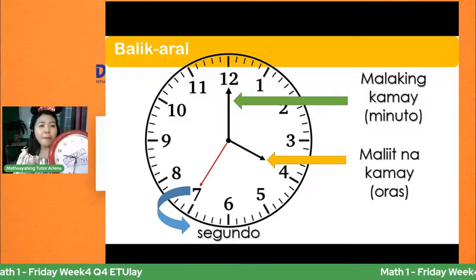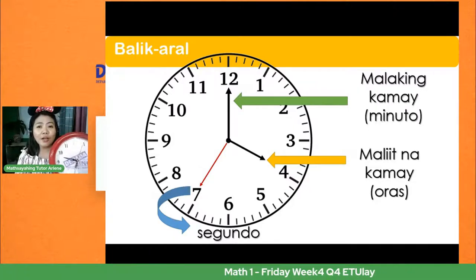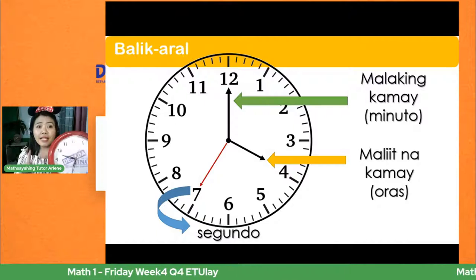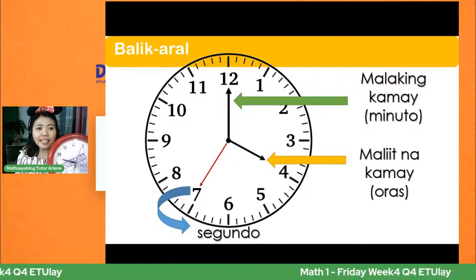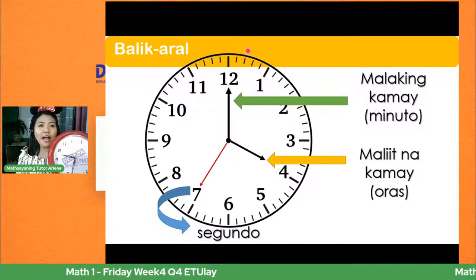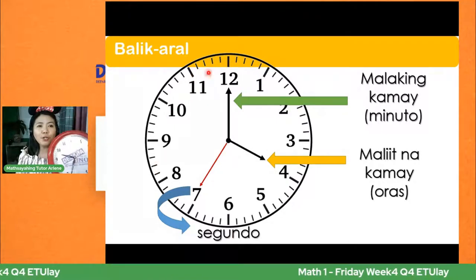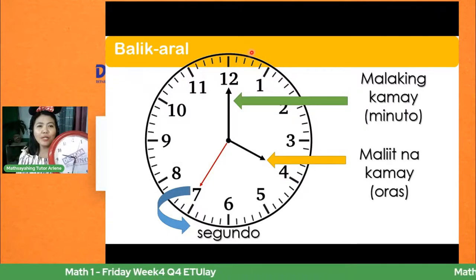Sa isang minuto, mayroon tayong animnapung segundo. 60 seconds in every one minute. Makikita natin — ito ang isang minuto, ikalawa, ikatlo, ikaapat. Kada animnapung segundo, aandar yung ating maliit na kamay. Tatapat siya sa bawat guhit na ito, sa bawat minuto.